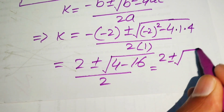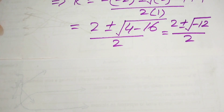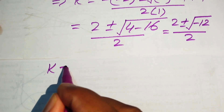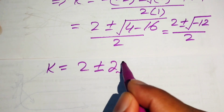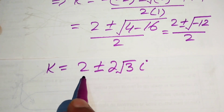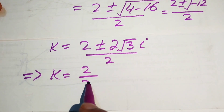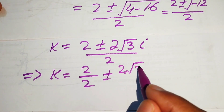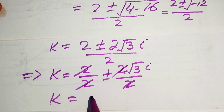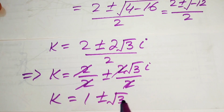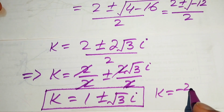Simplifying: k equals 2 plus or minus square root of minus 12, divided by 2. We simplify to get k equals 2 over 2 plus or minus 2 times square root of 3 times iota, divided by 2. Cancelling common factors gives k equals 1 plus or minus square root of 3 times iota. These are the other two complex roots of the given equation, and the third root from equation 2 is k equals minus 2.